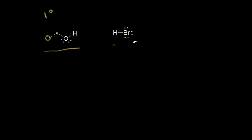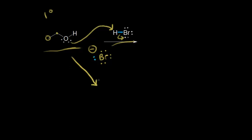We have HBr, a strong acid, and ethanol, which is going to function as a base. The first step is to protonate the oxygen — a proton transfer occurs. A lone pair of electrons on the oxygen picks up this proton, and these electrons are left behind on the bromine, forming a bromide anion with a negative one formal charge. So we protonate the oxygen, which still has one lone pair, giving it a plus one formal charge.